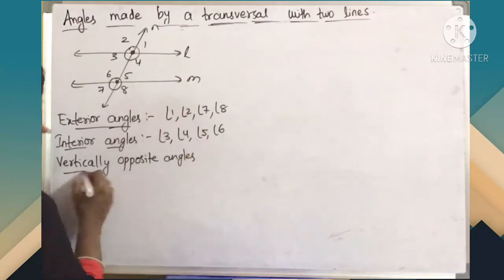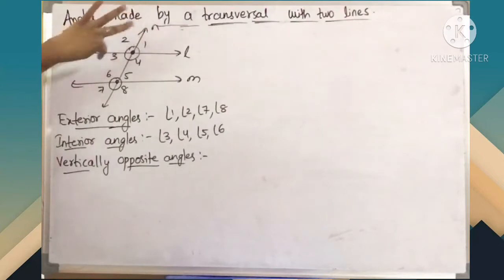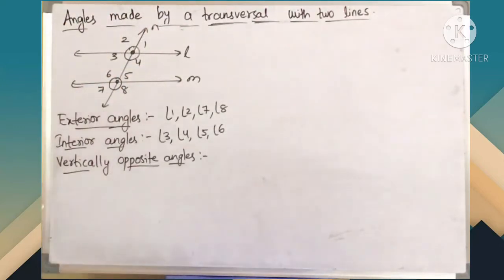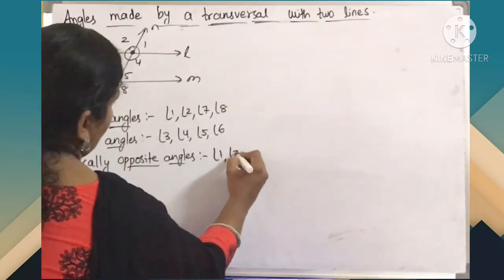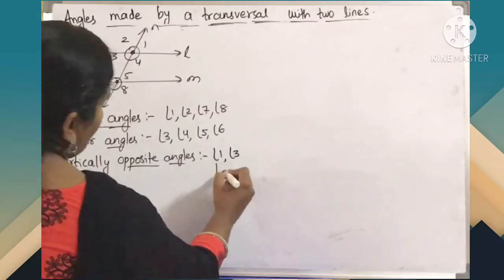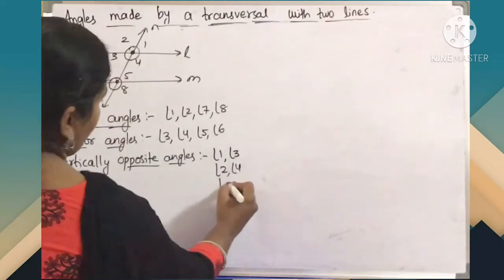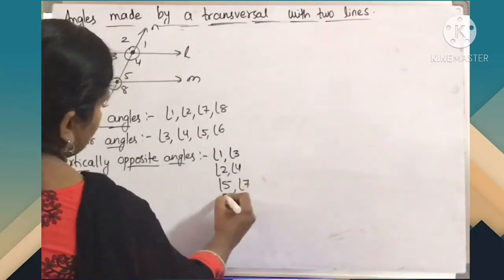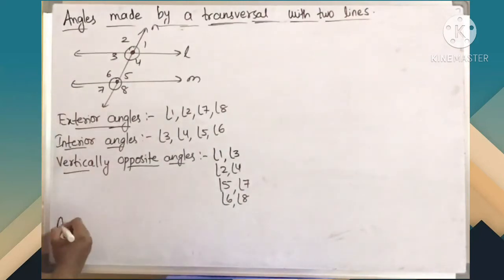Coming to next, vertically opposite angles. You are going to get 4 pairs of vertically opposite angles. When two lines intersect, the angles which are formed opposite to each other are vertically opposite angles. Considering angles 1, 2, 3, 4: angle 1 and angle 3 are one pair, and angle 2 and angle 4 are one pair. For angles 5, 6, 7, 8: angle 5 and angle 7 are one pair, and angle 6 and angle 8 are one pair. So totally you get 4 pairs of vertically opposite angles.